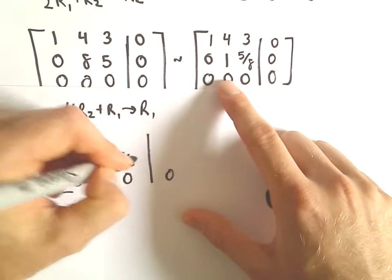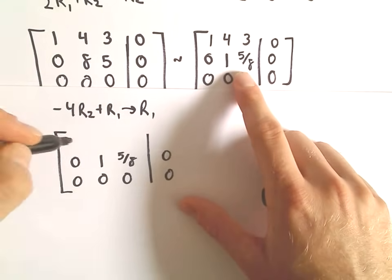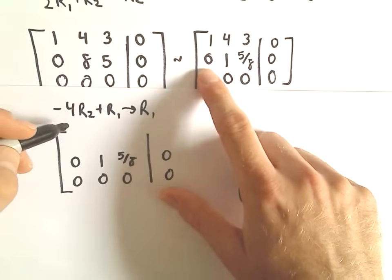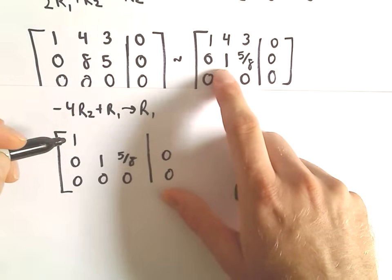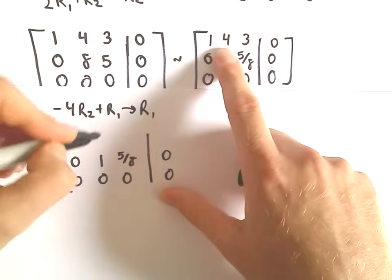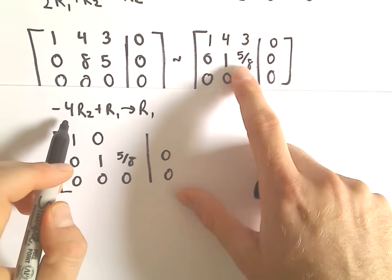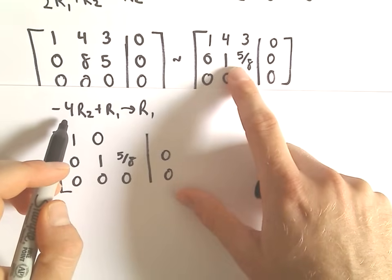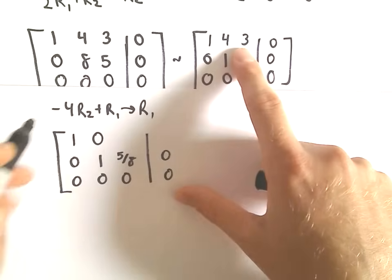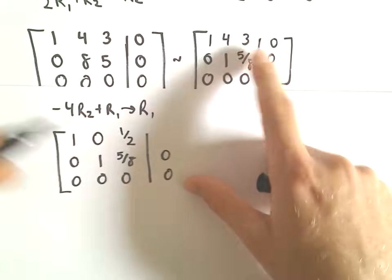0, 1, 5 8ths. So let's see, you can check my arithmetic here. So negative 4 times 0 plus 1 is 1. Negative 4 times 1 is negative 4 plus 4 is 0. Okay, there's the easy part. So I guess negative 4 times 5 8ths, that's going to be negative 5 halves. Negative 5 halves plus 3 would leave us with positive 1 half.